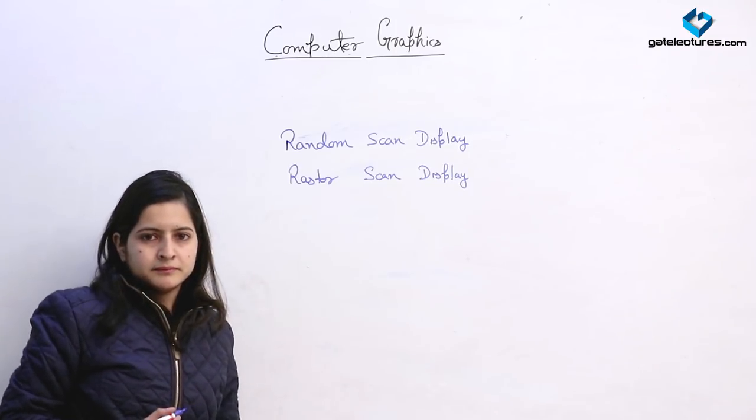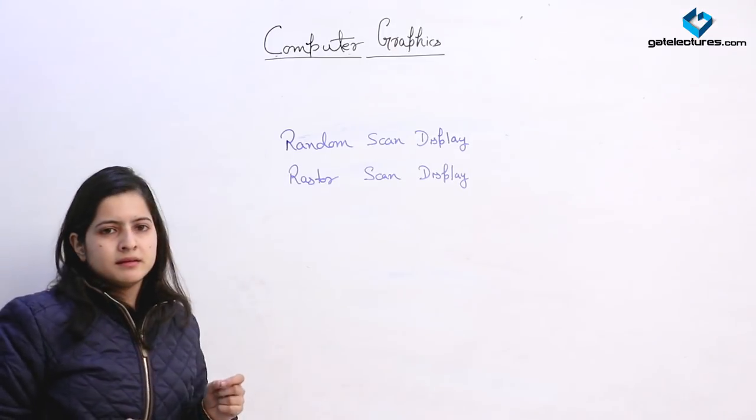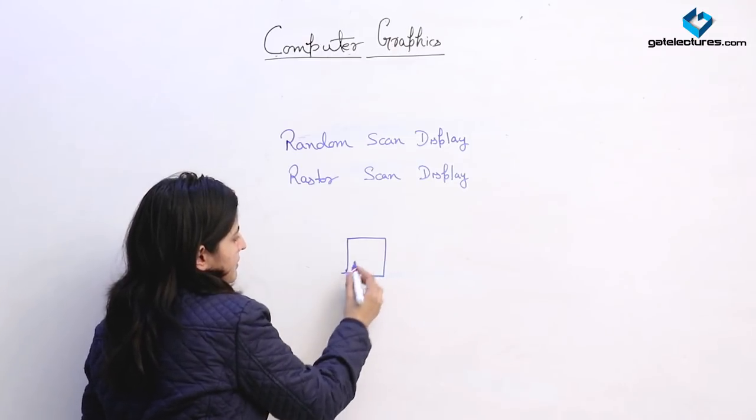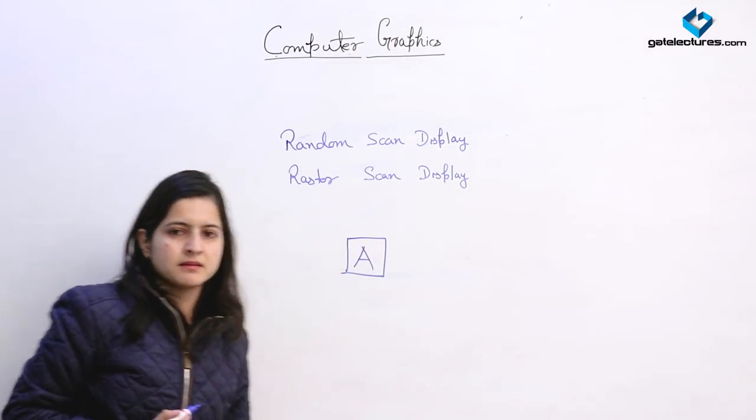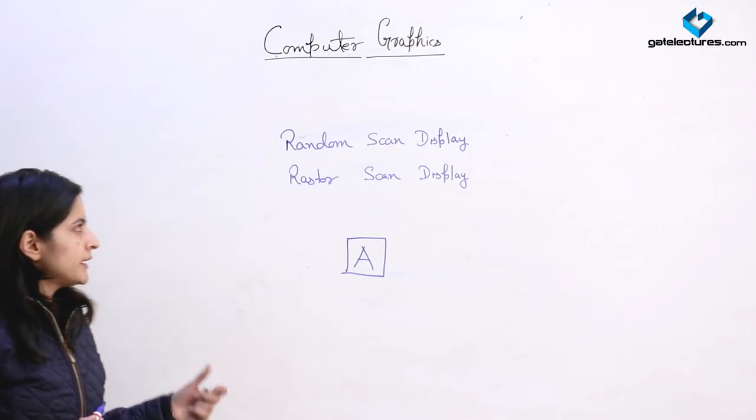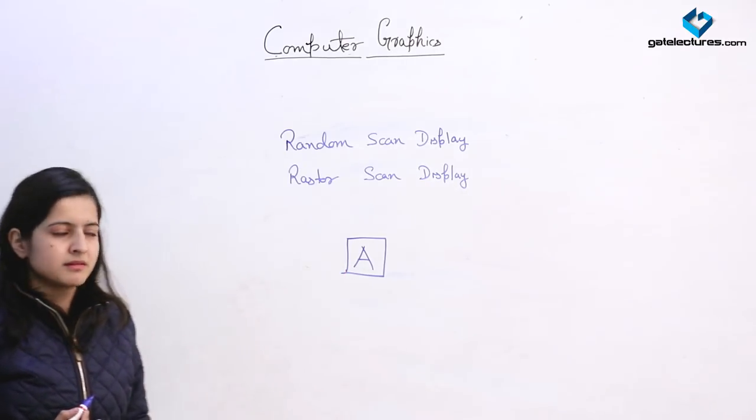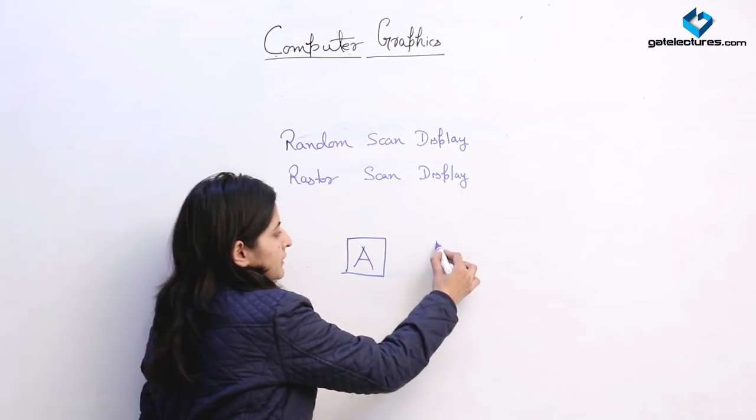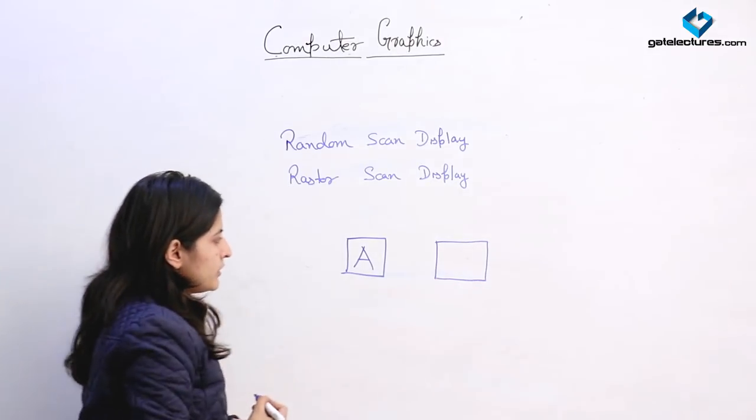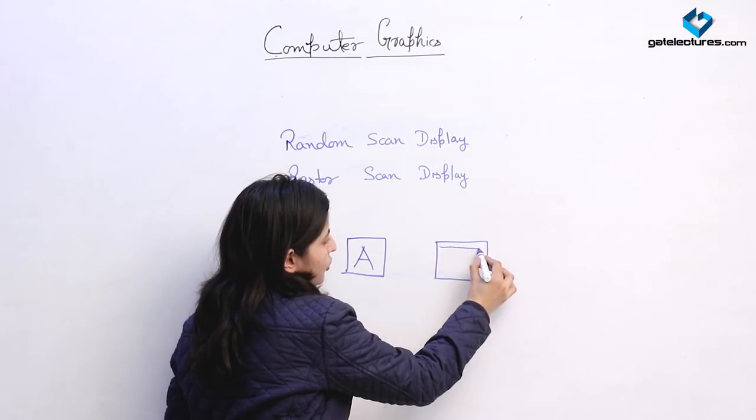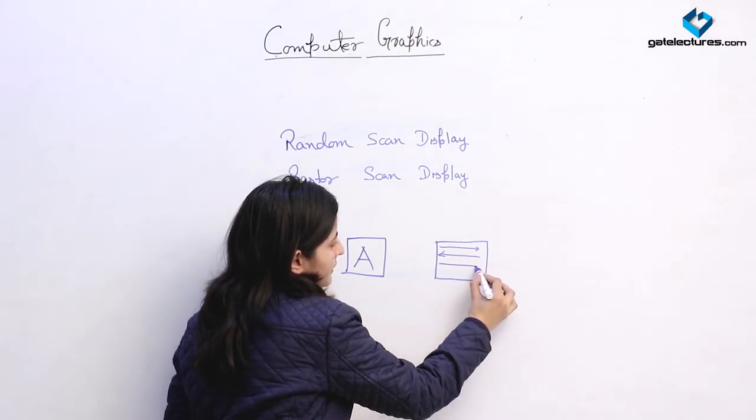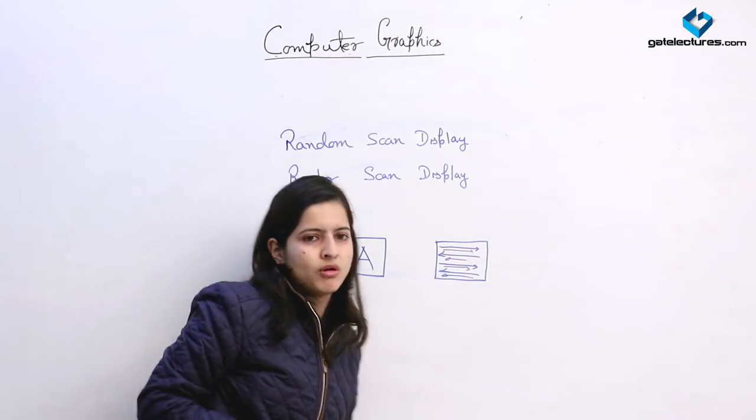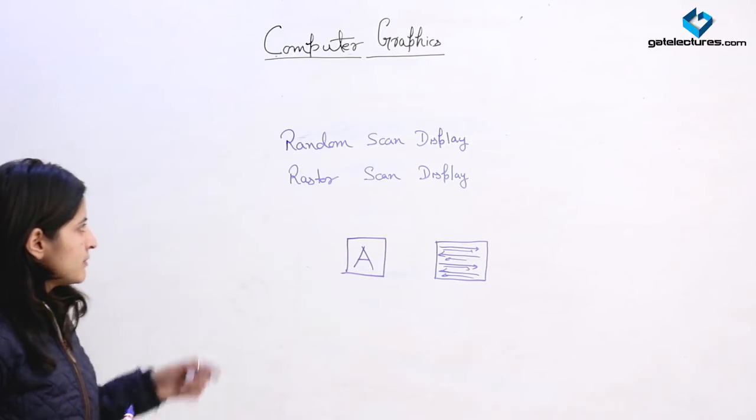In a random scan display, the electrons directly point to the picture where they have their pixels. Suppose this is the image we are storing. It will be created by random scan by directly striking the positions where we have the picture. Whereas in raster scan display, it scans the whole screen starting from top to bottom, row by row, and then again from bottom to top, placing pixels that are part of the picture. This is the basic difference between these two.